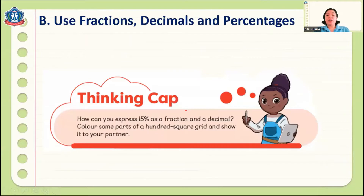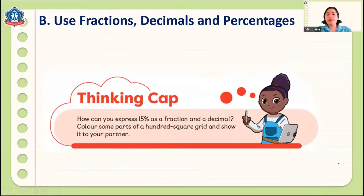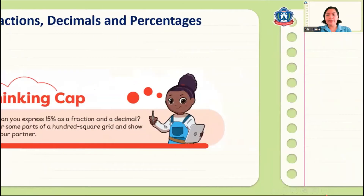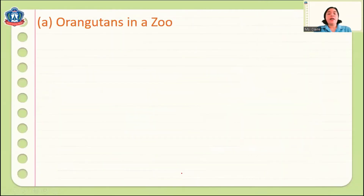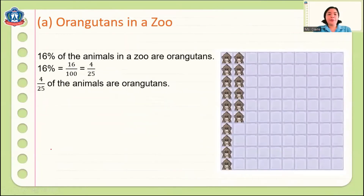How can you express 15% as a fraction and a decimal? If you have a 100-square grid, you can show how 15% looks as both a fraction and a decimal. Now, for orangutans in a zoo: 16% of the animals are orangutans. That means 16% means 16 out of 100.